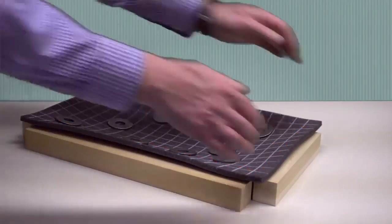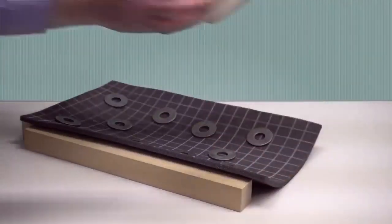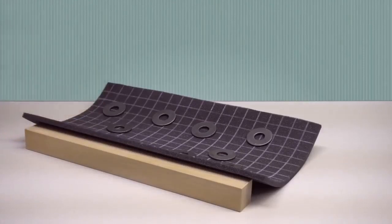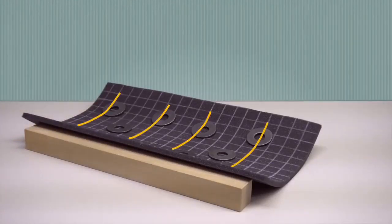If we remove one of the end supports, the plate deflects like this. And removing the other end support produces this result. Notice how bending occurs in only one direction.